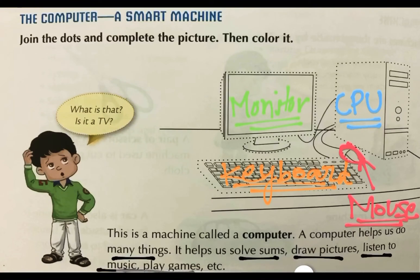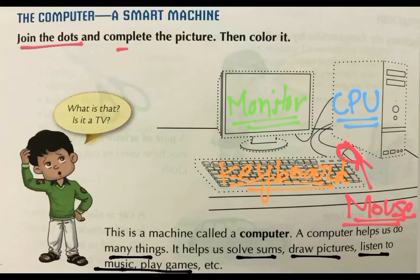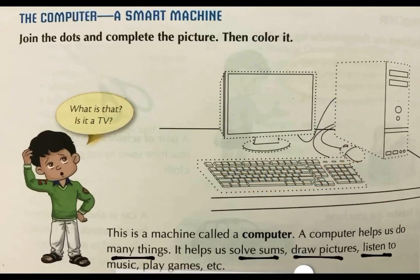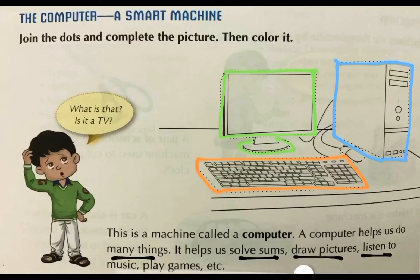So, we will outline all the figures. Let us join the dots and complete the picture, then color it. Shall we start? Pick up your favorite color. I will pick green for the monitor, blue for CPU, orange for keyboard, and red for the mouse. Now, you can color it at your home.